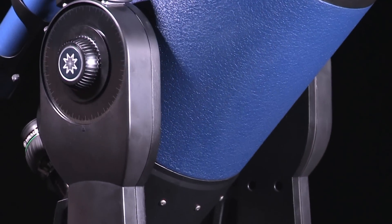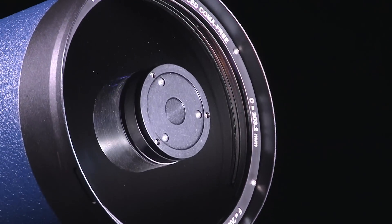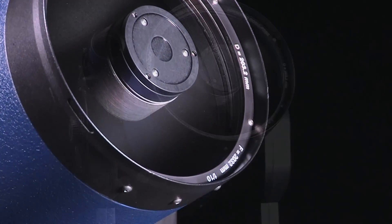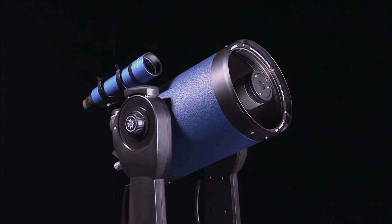The combination of the sturdy yet portable dual-fork mount and superior optics makes the LX90 the most versatile telescope in its class, capable of both visual astronomy and astrophotography.